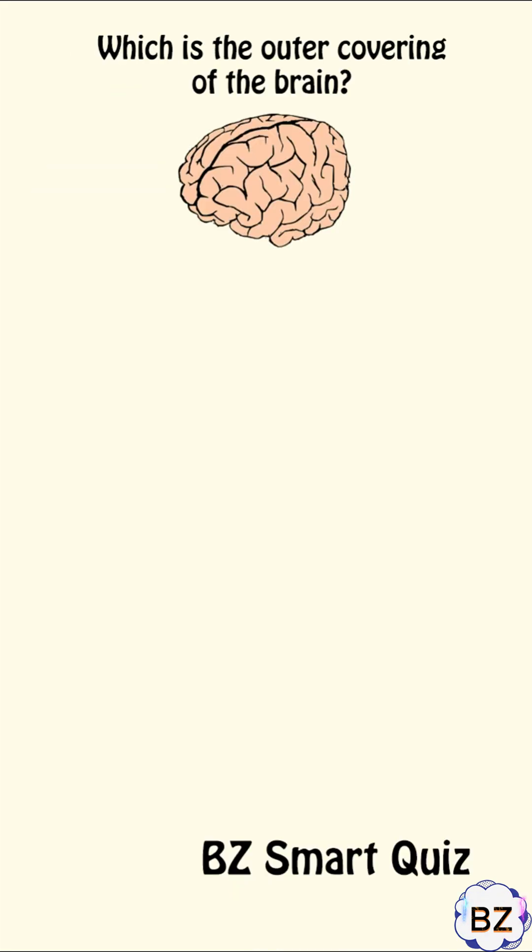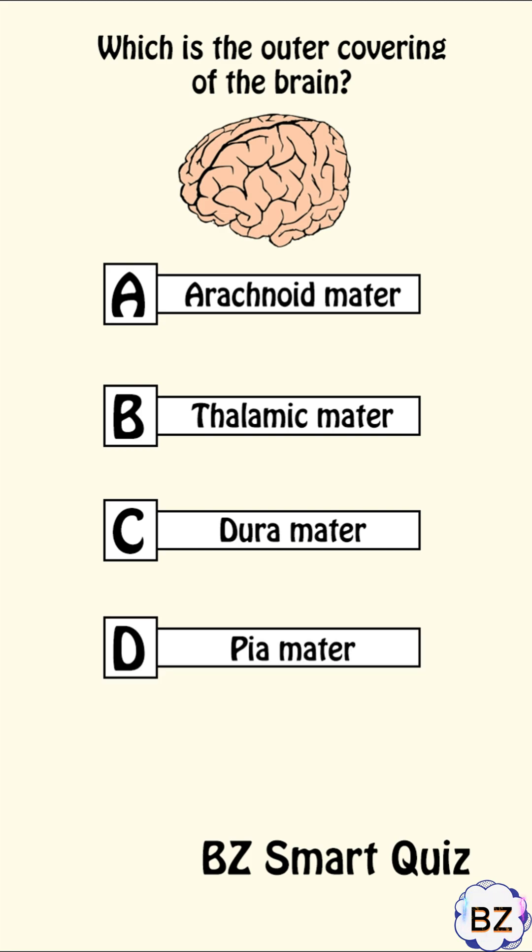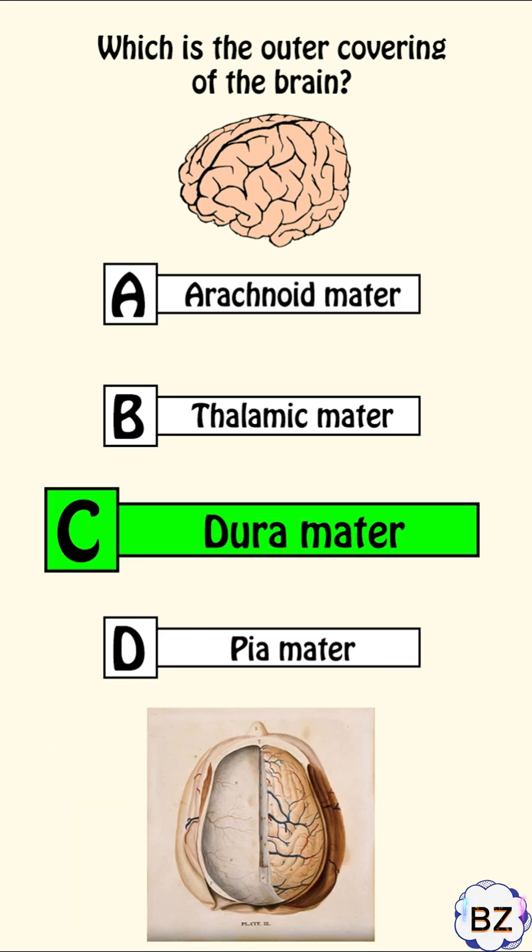Which is the outer covering of the brain? A. Arachnoid mater, B. Thalamic mater, C. Dura mater, D. Pia mater. Correct answer: C. Dura mater.